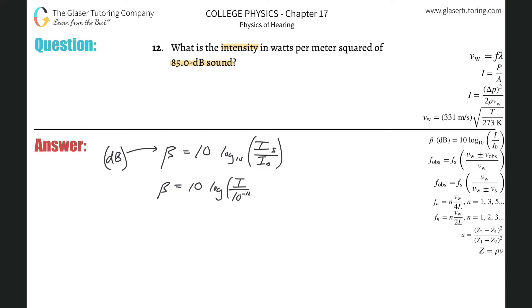So this is going to be the intensity divided by just I sub o, which is 10 to the minus 12. This is by the way for human hearing. It might be different for other animals and their threshold might be a little different, but we can definitely make these assumptions.